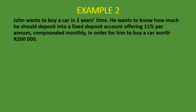Let's look at the second example quickly. John wants to buy a car in two years' time. He wants to know how much he should deposit into a fixed account offering 11% per annum compounded monthly, in order to buy a car worth R200,000. So he wants to know how much to put into that account now for it to grow to R200,000 in two years' time. It's compounded monthly — 12 times a year — so we need to apply the adjustment.